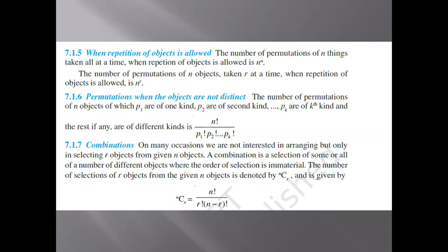For permutations when the objects are not all distinct, the number of permutations will be equal to n! divided by p1! times p2! and so on up to pk!.